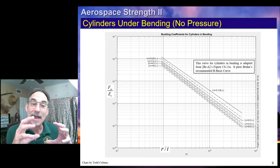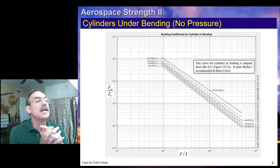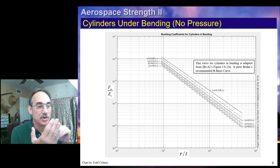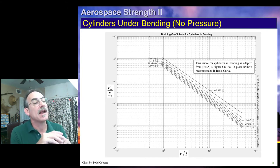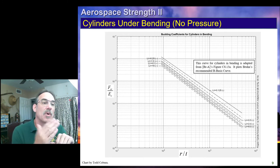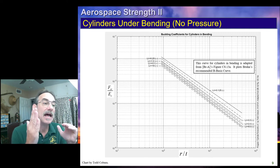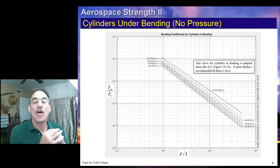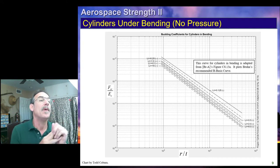If we have a cylinder under bending, we use a bending curve where we enter with the R/T ratio, then go up to the appropriate L/R ratio — values like 0.125, 0.25, 0.5, and so on. Instead of reading K directly, we read F_CR / E_C from this curve. We then multiply that value by the compressive modulus to obtain the buckling allowable for bending.